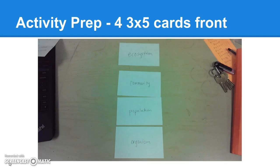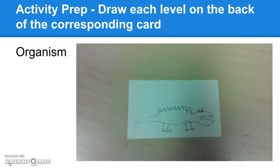After that, I pass out four three-by-five cards and on the front of each they just need to put the names of the levels of organization: ecosystem, community, population, and organism. Then on the back of each card they will draw a picture that corresponds with the name on the front. In my Shark Valley example, I drew an alligator for organism. I encourage them that you do not have to be good at drawing as long as I can actually tell what it is.